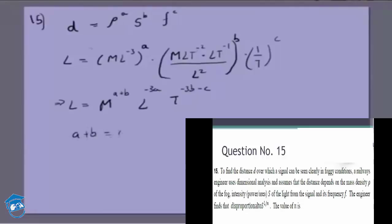This means a plus b equals 0, minus 3a equals 1, and minus 3b minus c equals 0.